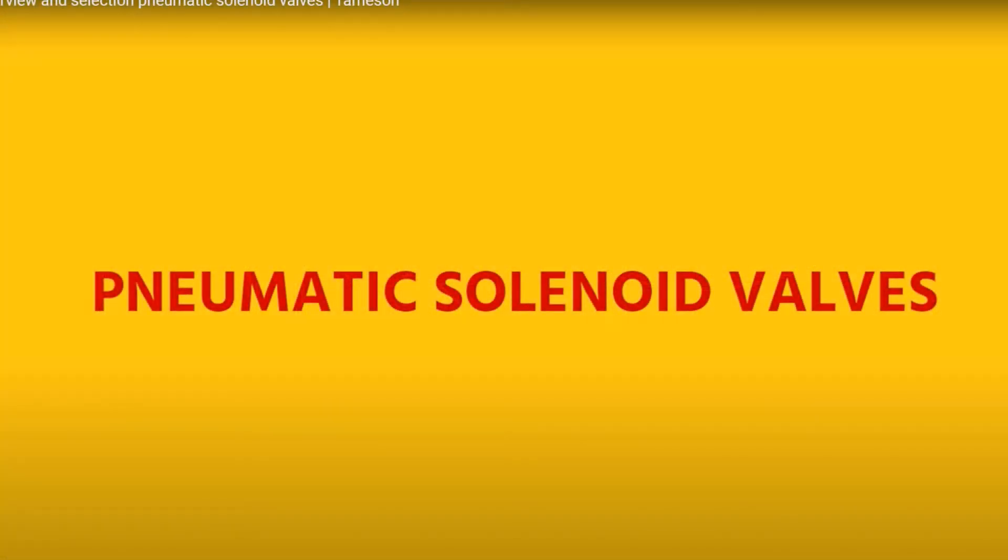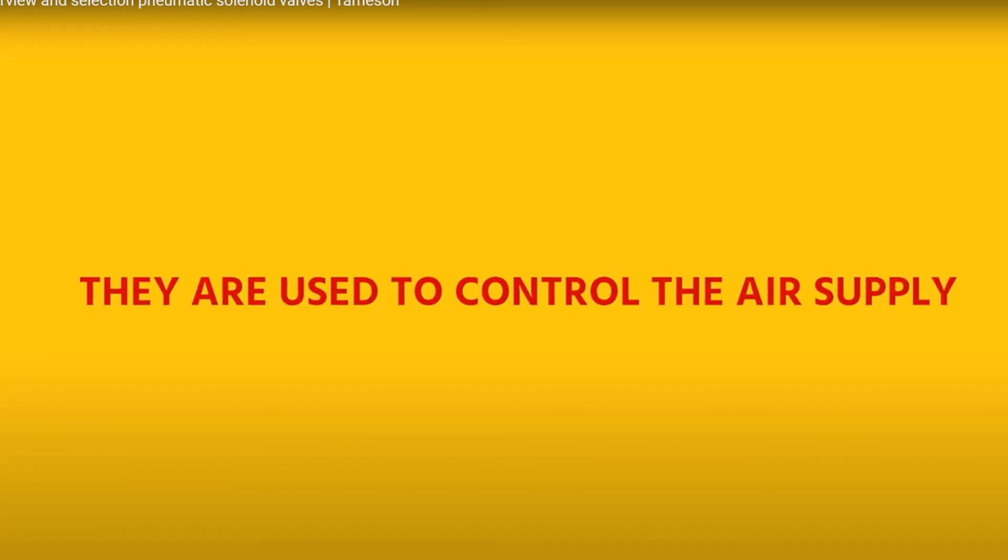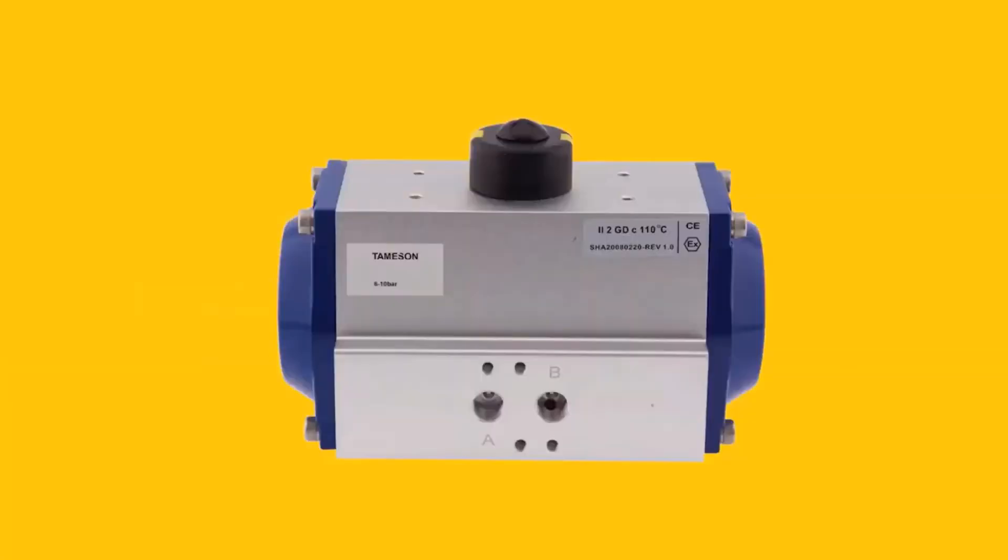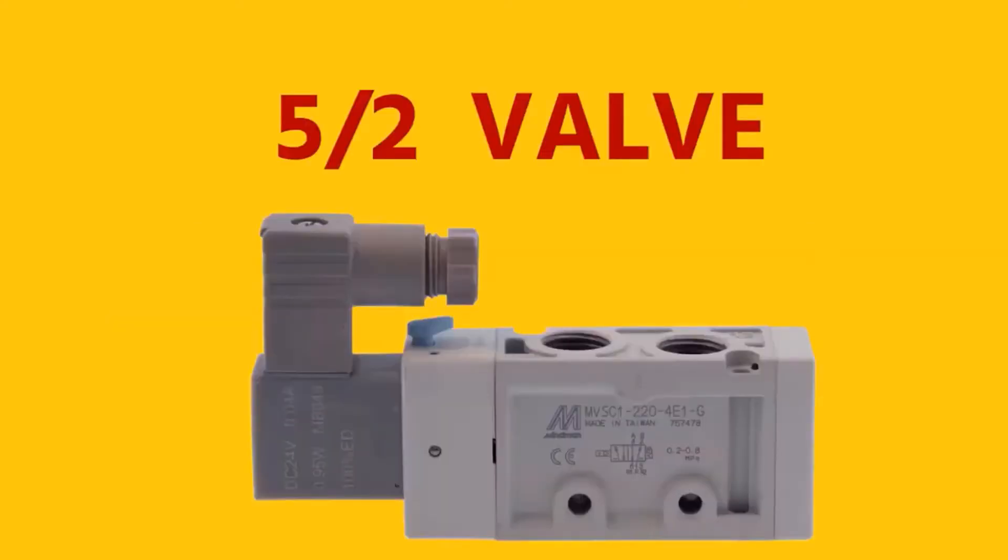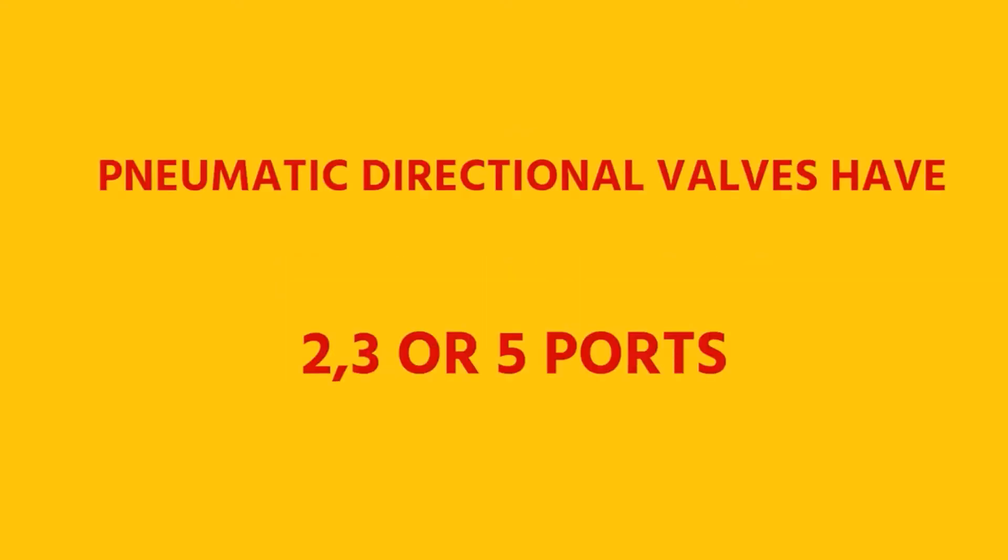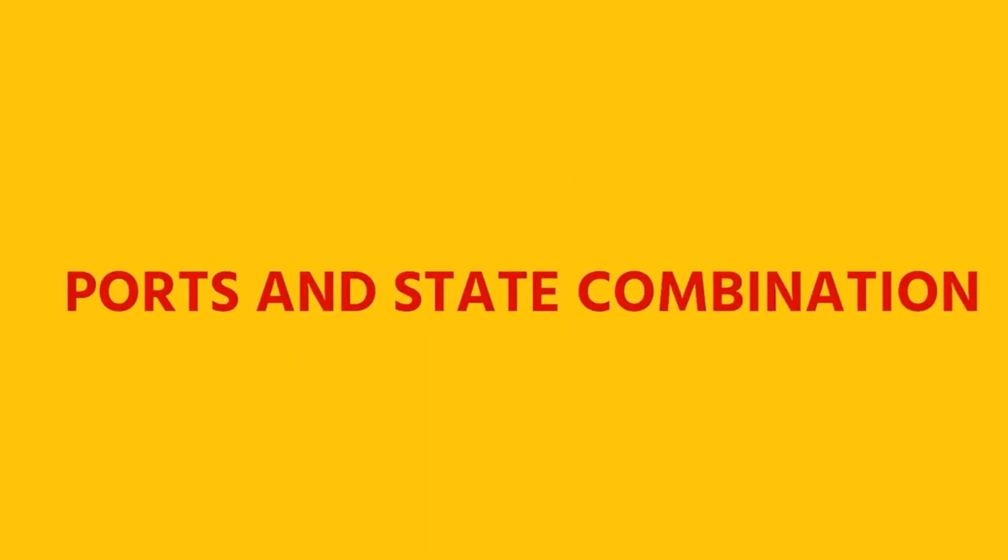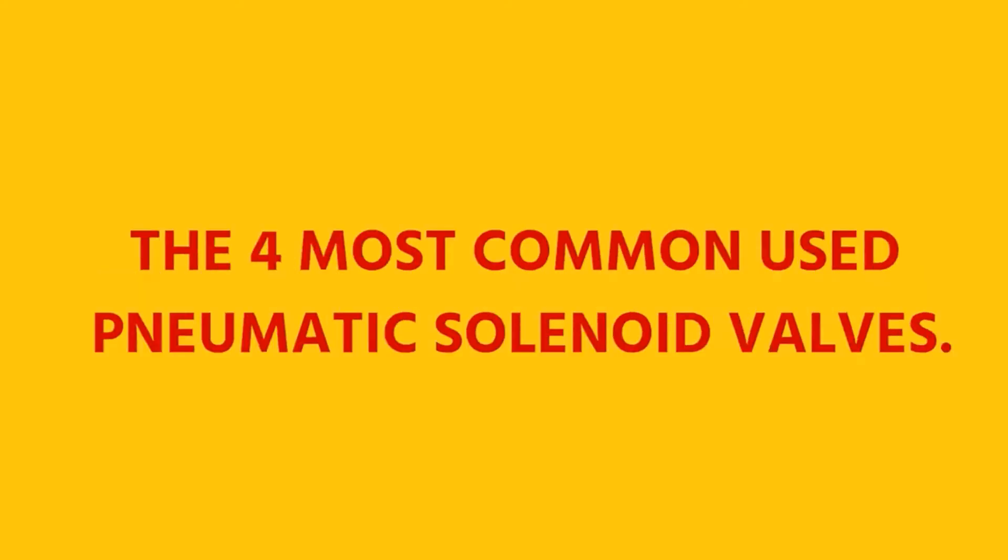Pneumatic solenoid valves are one of the most common elements in pneumatic systems. They are used to control air supply to cylinders, grippers or valve actuators. In this video, we explain how to find the correct pneumatic solenoid valve for your application. Directional valves are appointed with two numbers. The first number shows how many ports the valve has and the second number the amount of states. Directional valves usually have two, three or five ports. Selecting the correct port and state combination can be hard, so let me explain the four most common used pneumatic solenoid valves.